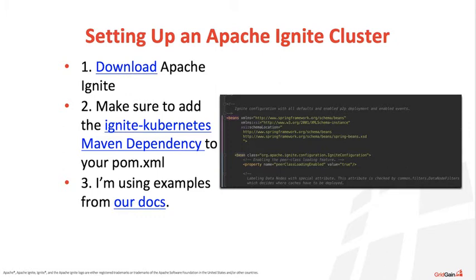To set up your Apache Ignite cluster: download Apache Ignite — I have the link provided here. Next, make sure you have the Ignite Kubernetes Maven dependency in your POM and load that up. I'm referring to the examples in our docs throughout this entire presentation. These three steps are not too challenging at all, and I've provided the link to the Maven dependency here as well.